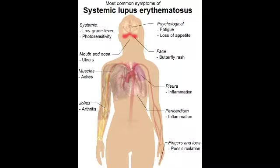What is systemic lupus erythematosus? Systemic lupus erythematosus, also known as SLE or lupus, is a systemic autoimmune disease which can affect any part of the body, and this is a type 3 hypersensitivity reaction.